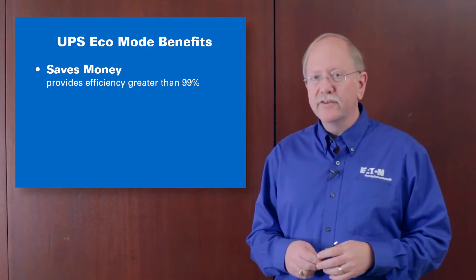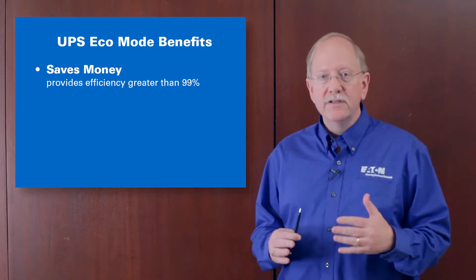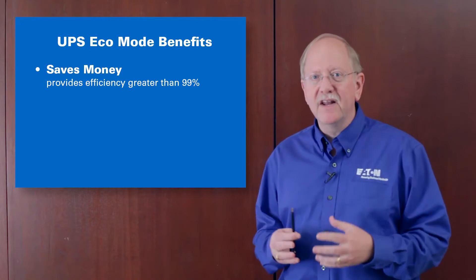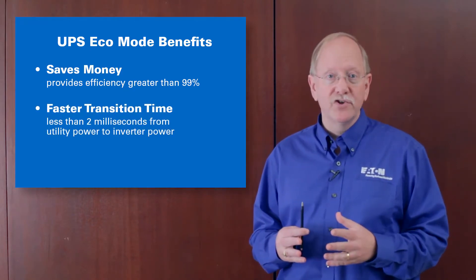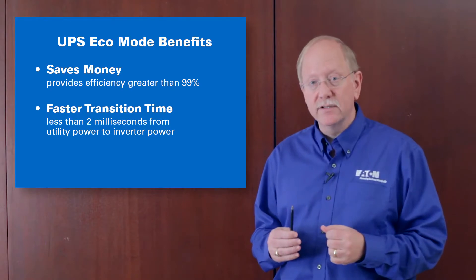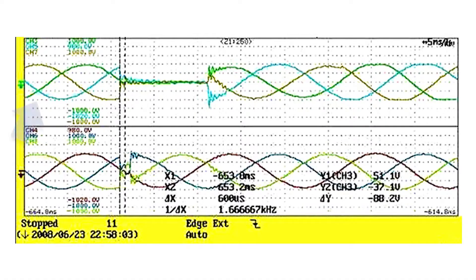By far the biggest concern with Eco mode UPS operation is the observer has trouble accepting that we can in fact transition from static switch operation to double conversion operation in less than two milliseconds. So we use an oscilloscope trace as proof.